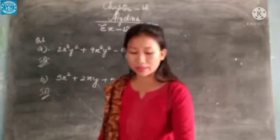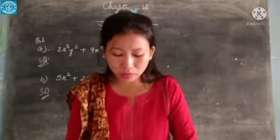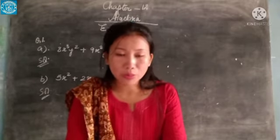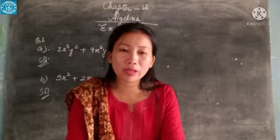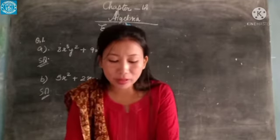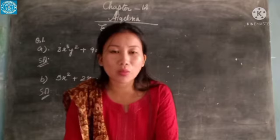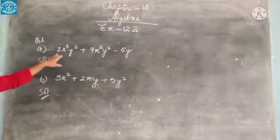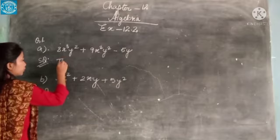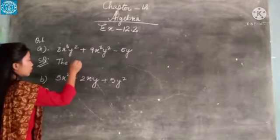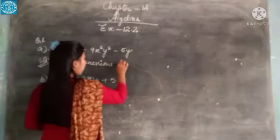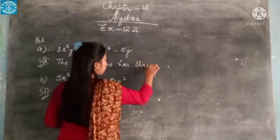Let's start with exercise 12.2, question number 1: Write all terms of the following algebraic expressions. As I have already mentioned, the expressions involve plus, minus, multiplication, and division signs. Here in question number 8, you are going to find out the terms — how many terms are being used. So in question number 8, you can see there are 3 terms. The expression has 3 terms.